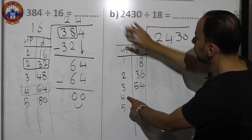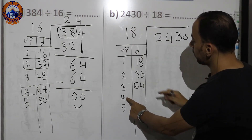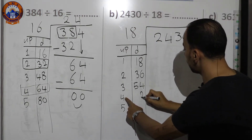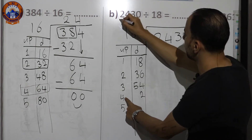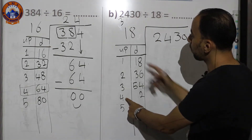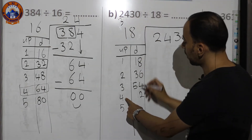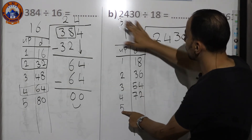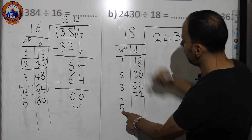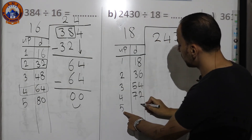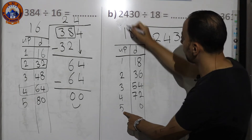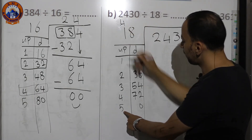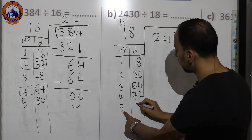18×4: 4×8=32, put 2 carry 3; 4×1=4 plus 3 equals 7 — so 72. 18×5: 5×8=40, put 0 carry 4; 5×1=5 plus 4 equals 9 — so 90.